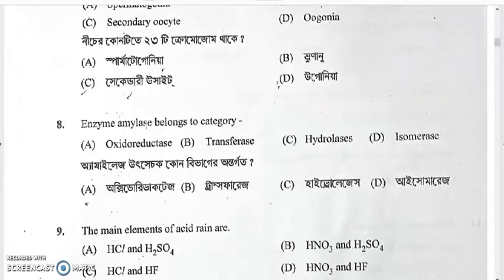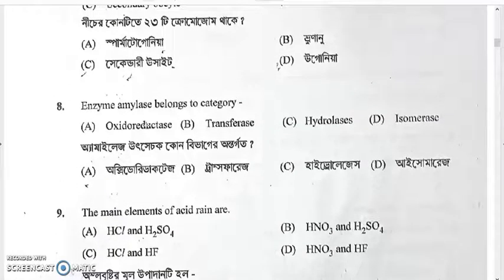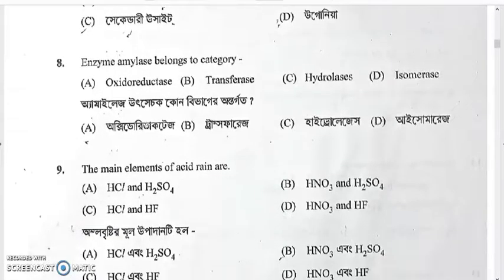Question eight: enzyme amylase belongs to which category — oxidoreductase, transferase, hydrolase, or isomerase? Enzyme amylase is a hydrolase; it works in the presence of H₂O and belongs to the hydrolase group.